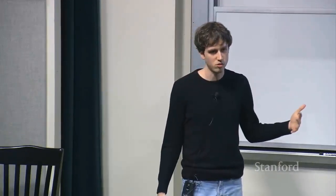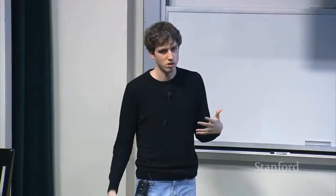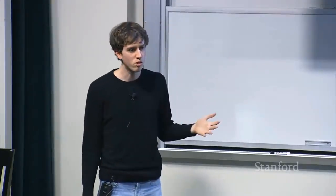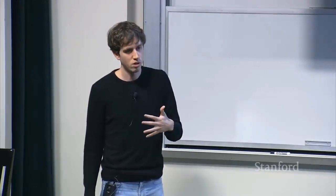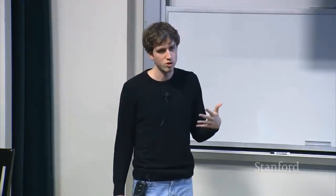You need to make sure that usage from existing users is not just growing because you're getting more users. If this can go in reverse, you're in an extremely powerful position. There's a small number of products where cohort usage actually increases over time. One example is WhatsApp — most messaging apps, as you get more of your friends on the app, there's more people to send messages to, so they get this increase in cohort usage over time. Uber on the rider side is another good example: as people get used to Uber, they use it more; as pickup times come down, they use it more; as prices come down, they use it more.